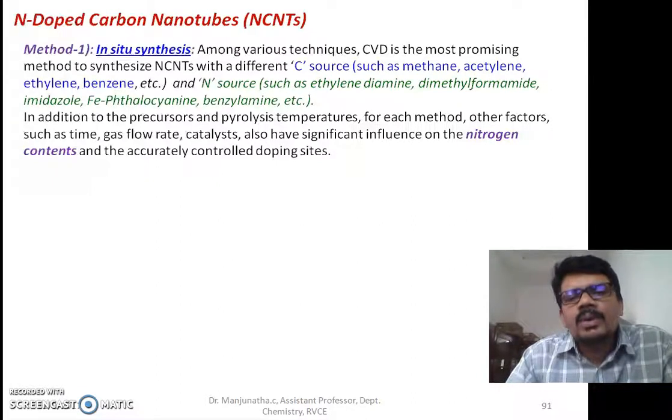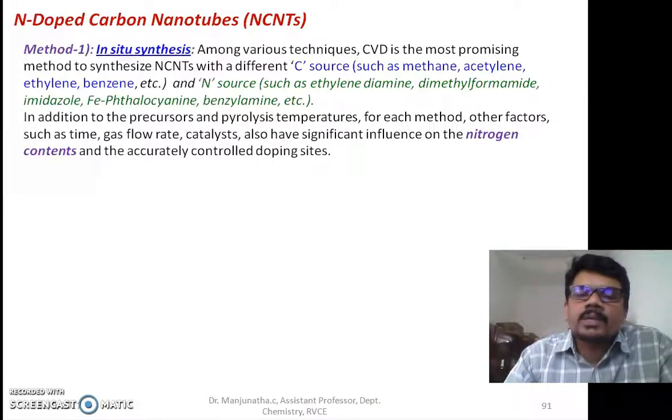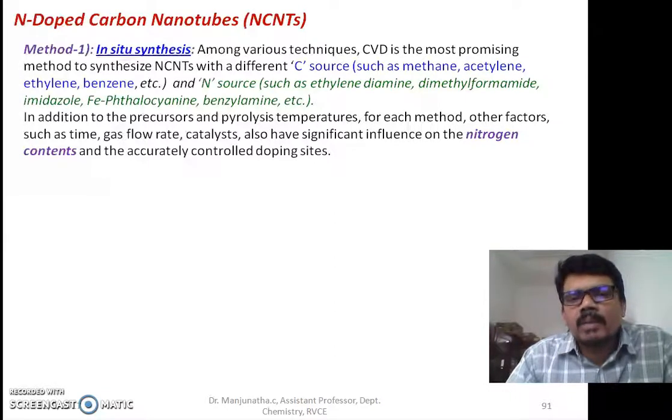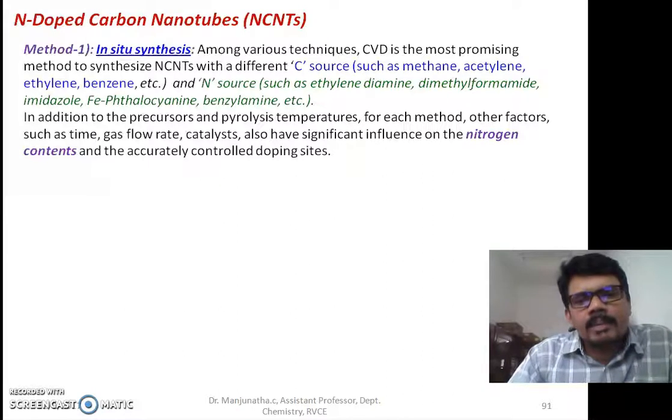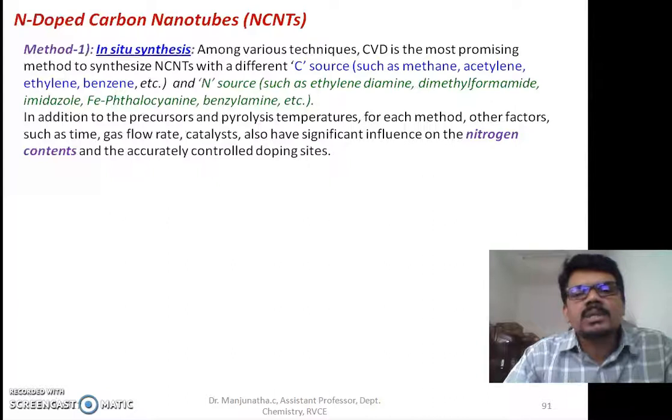We do the same CVD process that I discussed in the previous video. In addition to the precursors and pyrolysis temperatures, we vary parameters like heating rate, gas flow rate, and catalyst to dope nitrogen atoms in place of carbon atoms. This is the in-situ method where we dope nitrogen while preparing the carbon nanotube itself.